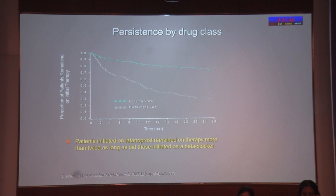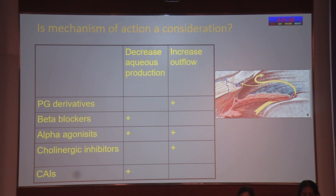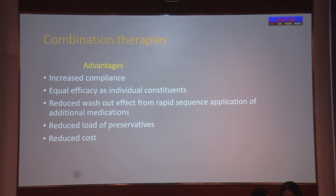Systemic medications to remember: topical beta blockers are less effective when systemic beta blockers are being used, and may increase adverse effects such as nocturnal hypertension. Many patients are elderly on multiple drugs, and systemic drug interaction is possible. We also need to remember that drugs do not work for those who do not use them. Persistence by drug class — PG analogs score — patients on latanoprost did better than those on beta blockers in maintaining therapy. Is mechanism of action a consideration? Pair drugs that complement each other in action — those which decrease aqueous production should be combined with those increasing outflow through the trabecular meshwork or uveoscleral pathway.